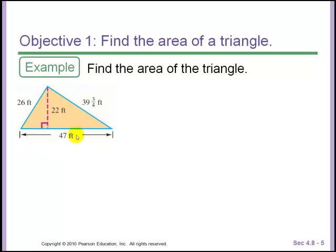This triangle has three side lengths of 26 feet, 39 and 3 fourths feet and 47 feet, and this interior measure of 22 feet. Notice right here is this right angle. That means this 22 feet and this 47 feet are our base and our height. That is what we're going to use to find the area. We don't use the 26 or the 39 and 3 fourths.